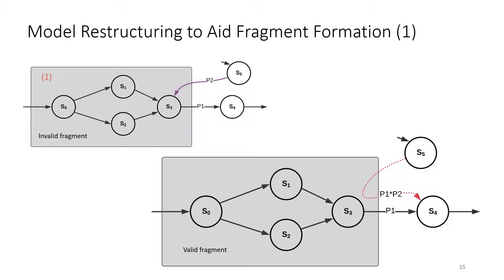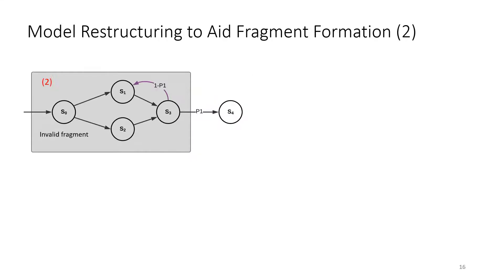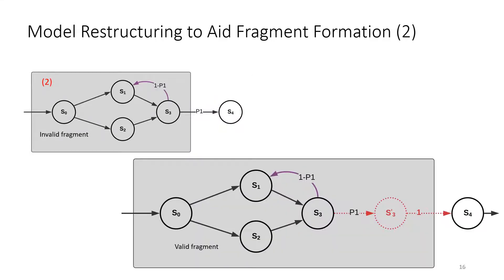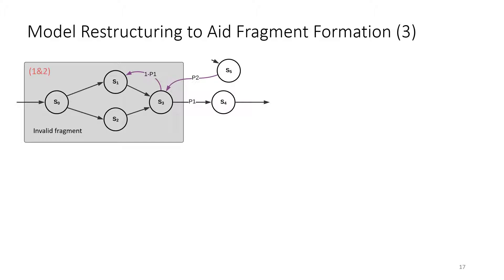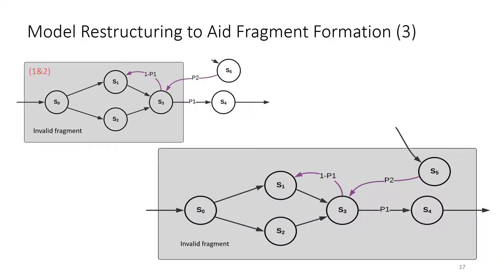Condition 1 is where the state has an incoming transition from outside of the fragment — we address this by bypassing the transition to go directly to the next state, so the state is no longer receiving incoming transitions from outside and can become a valid output state. For Condition 2, where the state has outgoing transitions to inside of the fragment, we introduce an auxiliary state between the two states so the auxiliary state can be a valid output state, allowing the fragment to be completed. For Condition 3, which has both issues, we do not have a good solution, so we allow the fragment to continue to grow until Condition 1 or 2 is met.